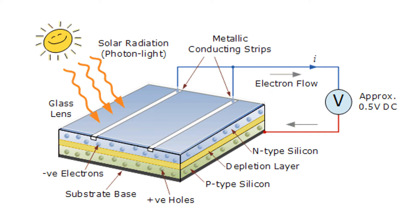This is a typical schematic of solar energy conversion. The solar radiation — that is, photon light — falls on the solar panel. Inside the panel we have n-type silicon (negative electrons) and p-type silicon (positive), with a depletion layer in between, and metallic conducting plates on either side.